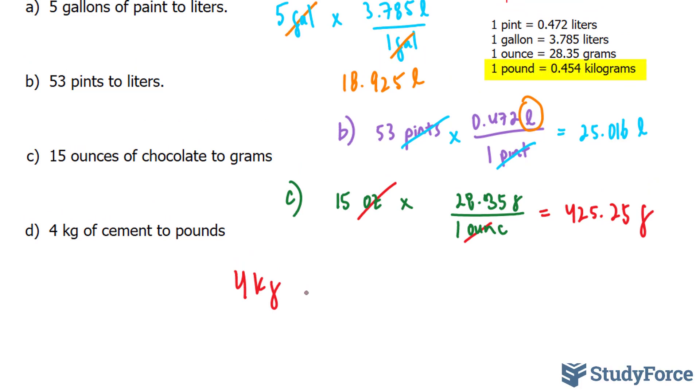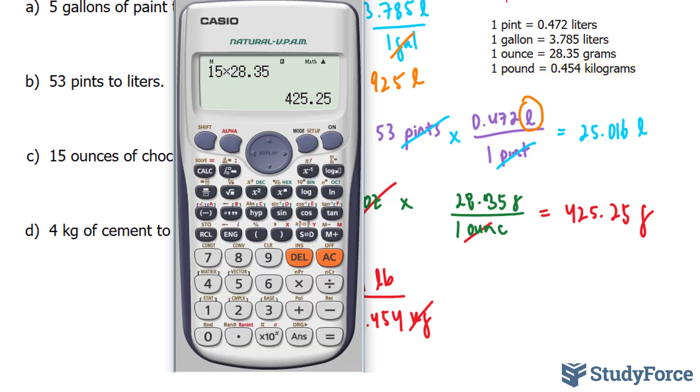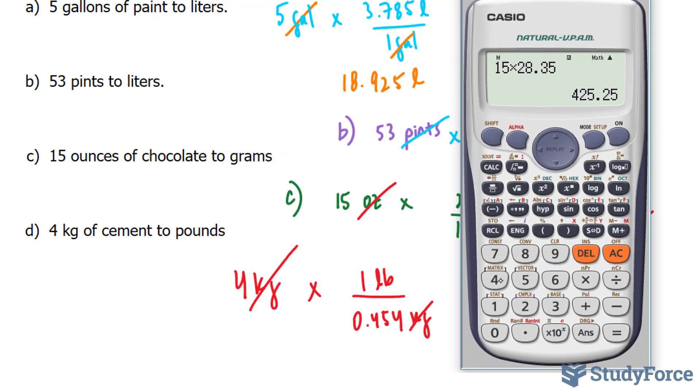And this time, this part will be at the bottom. So multiplying this by 1 pound over 0.454 kg. The kgs cancel out. 4 times 1 is equal to 4 divided by 0.454.